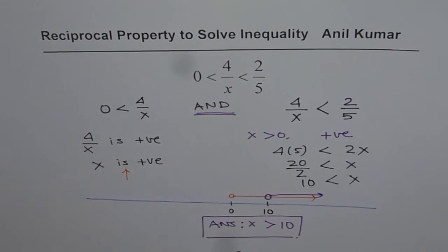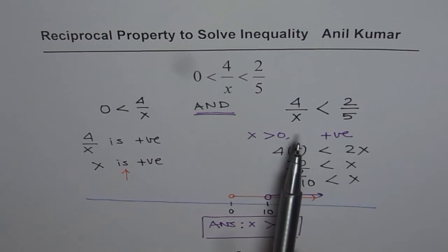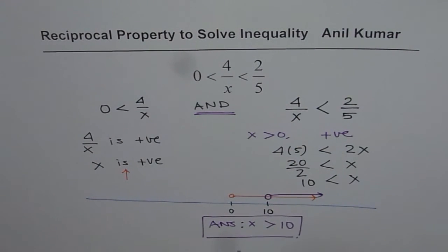In such cases, you can split the inequality into two parts and apply the AND condition. The first part on your left indicates that x is positive. Treating x as positive, you can solve the right part by cross multiplication without changing the inequality direction. This is a great strategy, in addition to the reciprocal properties you are learning in these videos. Thank you and all the best.